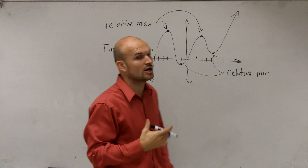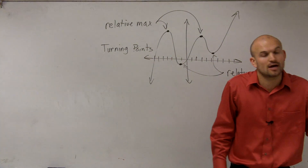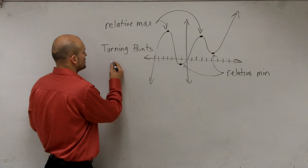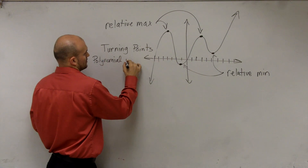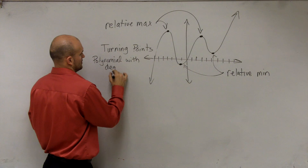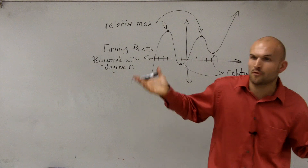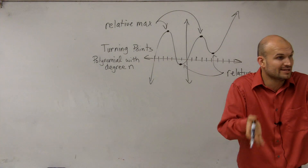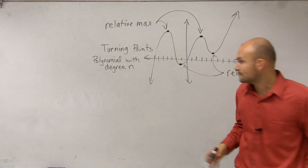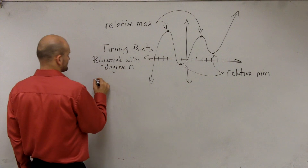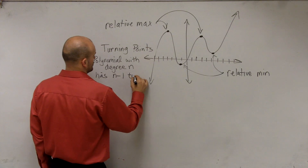Turning points are very helpful to find at least the minimal degree that our polynomial can have. So if we have a polynomial with degree n — n could be 5, 4, 3, 2, whatever n is — if we know what the degree is, the number of turning points is n minus 1. So a degree-n polynomial has at most n minus 1 turning points.